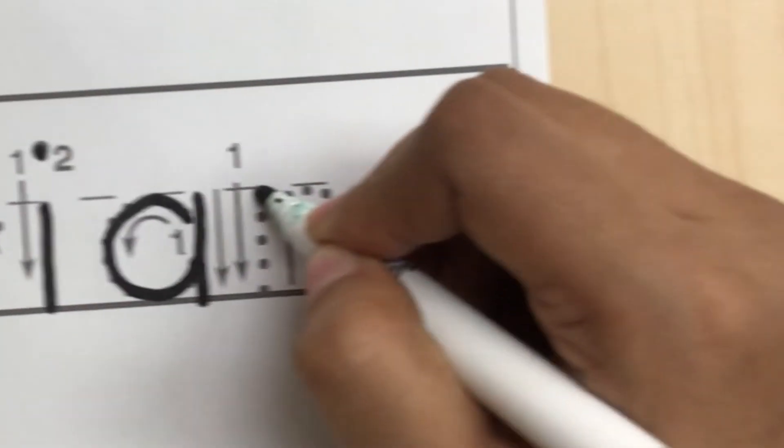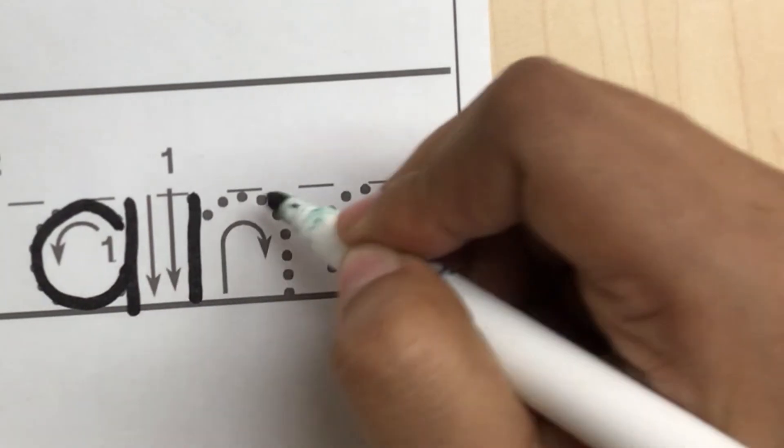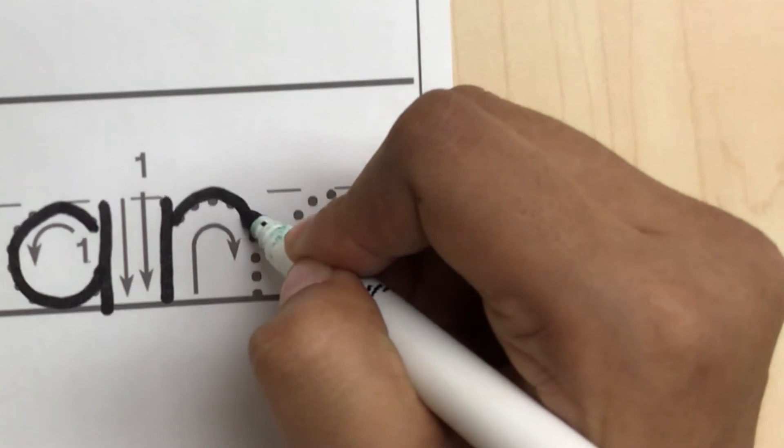Start on the broken line and make the straight line to the baseline. Pick up your pencil and start just below the broken line and make an arch from the broken line to the baseline.